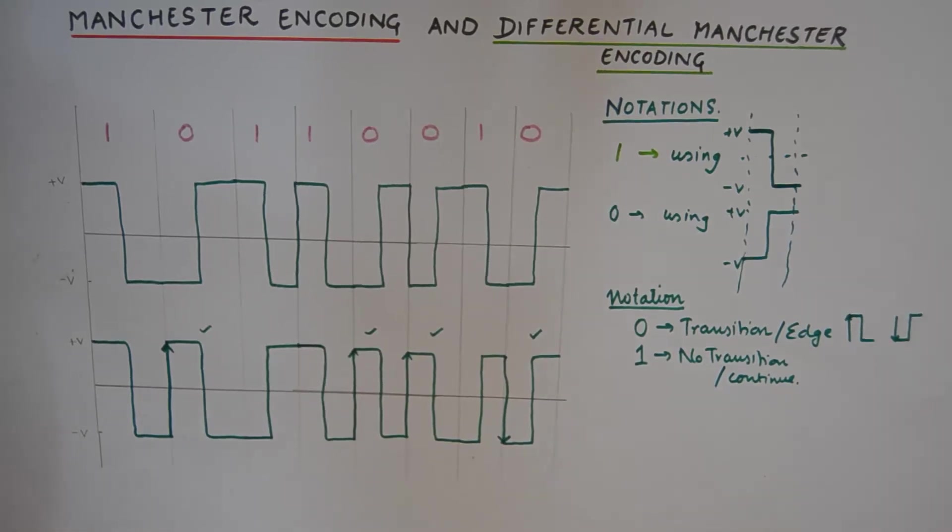So that is how Manchester encoding is different from a differential Manchester encoding, but both of them have their own advantages and disadvantages and they need to be understood separately to perform various numericals on spectral density etc.